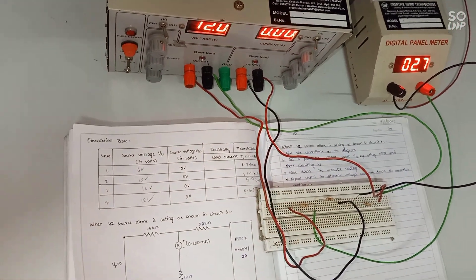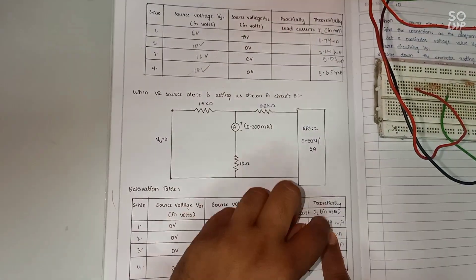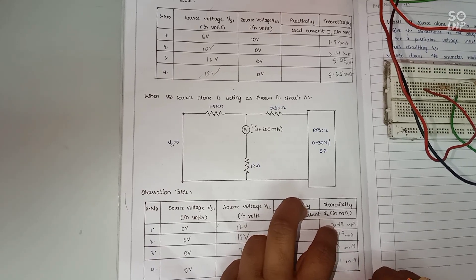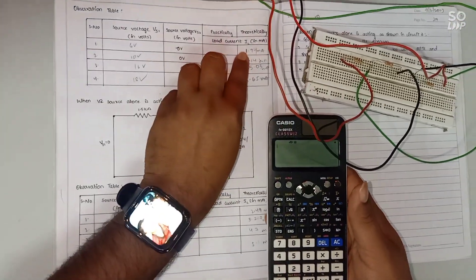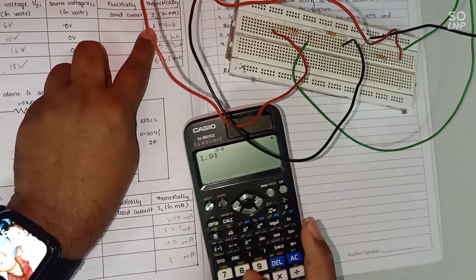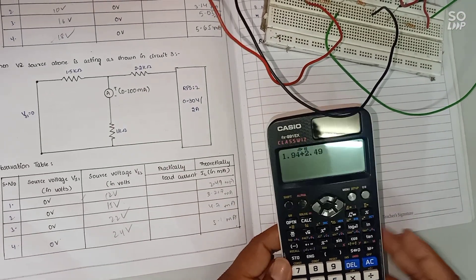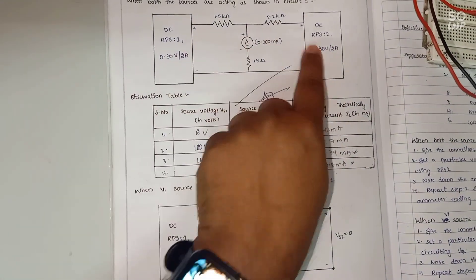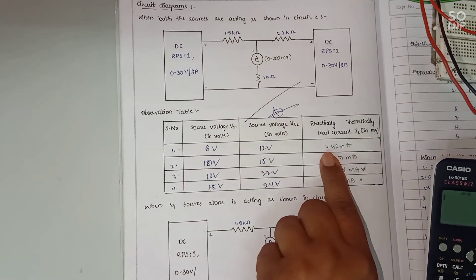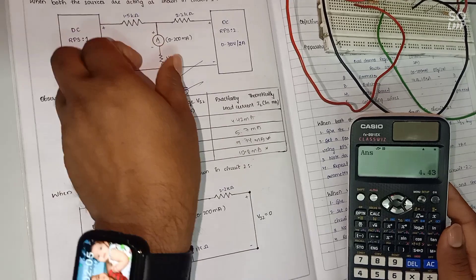Adding these two individual responses: when VS1 is acting alone we are getting the response 1.94, and when VS2 is acting alone we are getting the response 2.49. The total response is equal to 4.43 by adding these two individual responses. When both the sources are acting, we are getting the response 4.42. This is equal to the total response, so the superposition theorem is verified.